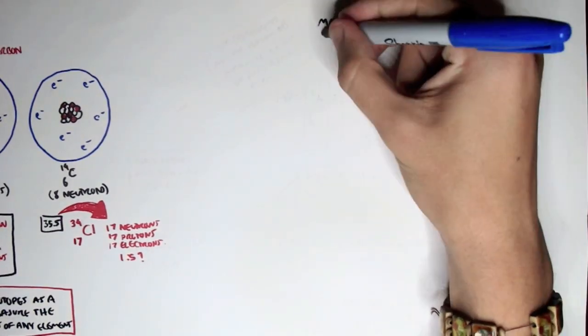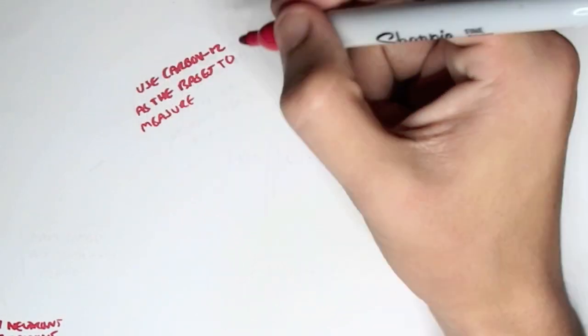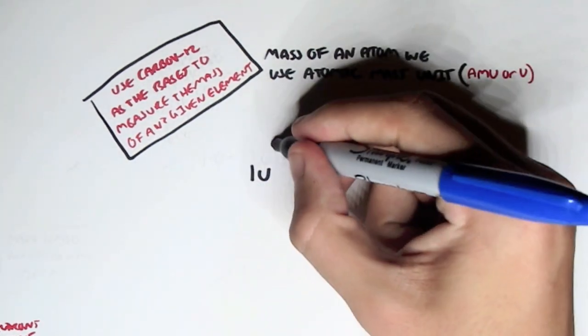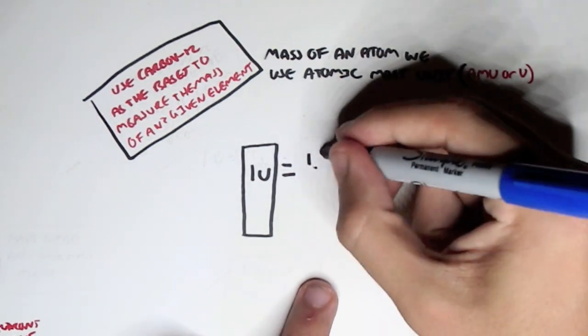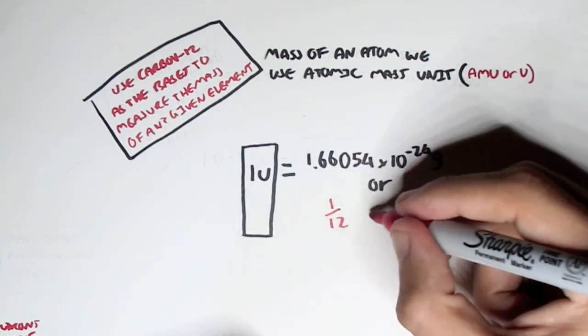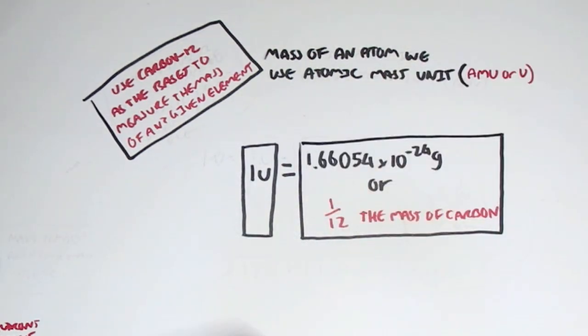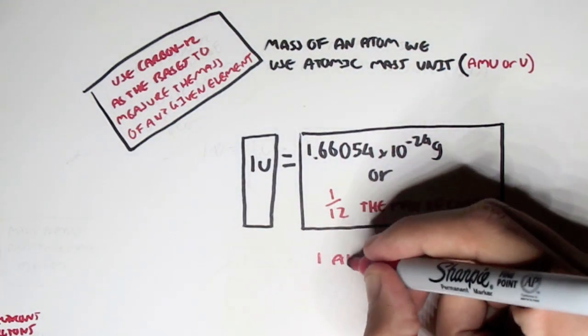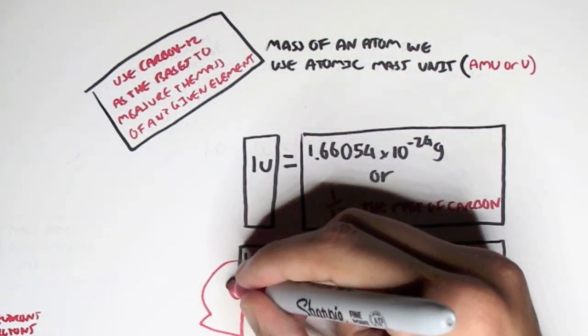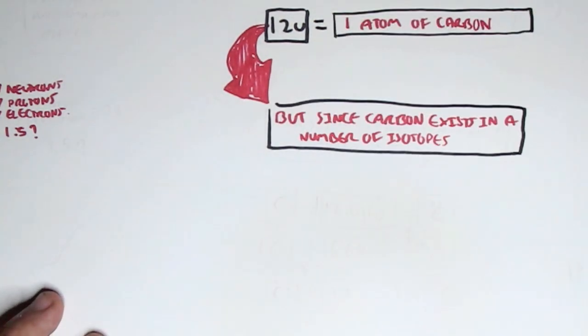Well if we use carbon 12's isotope as a basis to measure the atomic mass of any element, we can see where this weight of each element comes from. The mass of an atom, we use the atom mass unit scale, abbreviated AMU or U. And remember, we use carbon 12 as the basis to measure the mass of any given element. So, 1 atomic mass unit, 1U, is equal to 1.66054 times 10 to the negative 24 grams, which is very small. Or, alternatively, 1 atomic mass unit also equals 1 twelfth the mass of carbon. So, if we're looking at 1 full atom of carbon, this will mean that the atomic mass unit is 12. But since carbon exists in a number of isotopes, that is why the actual mass of carbon is 12.011 atomic mass units.